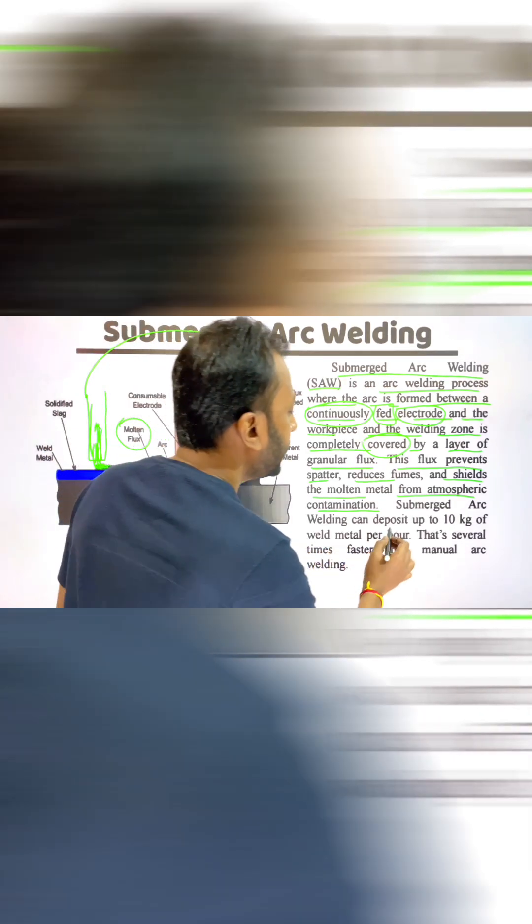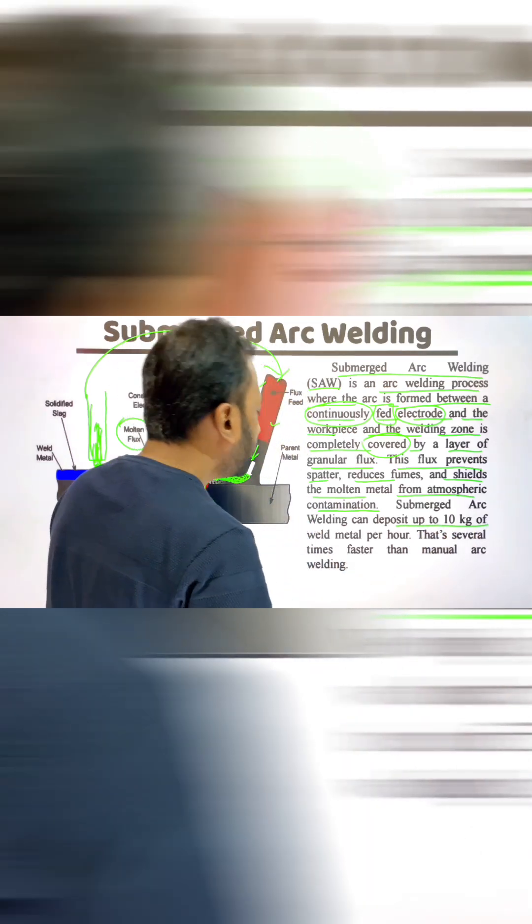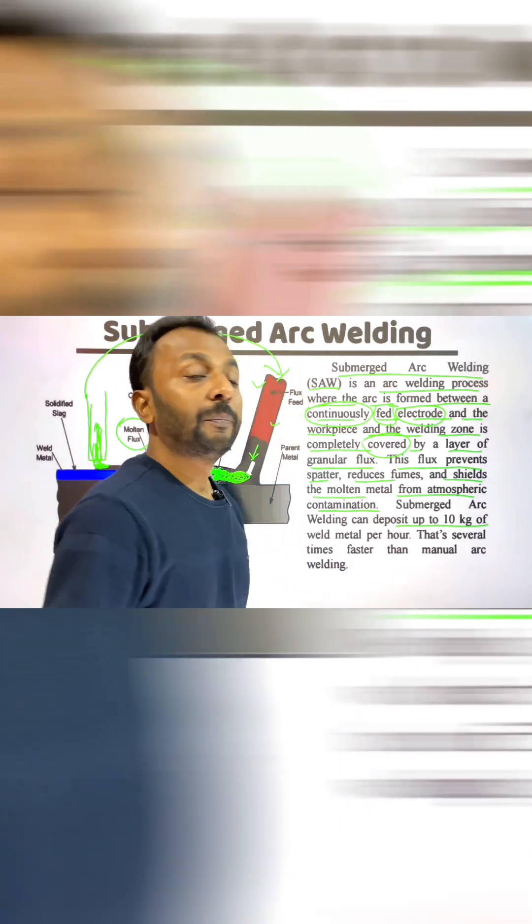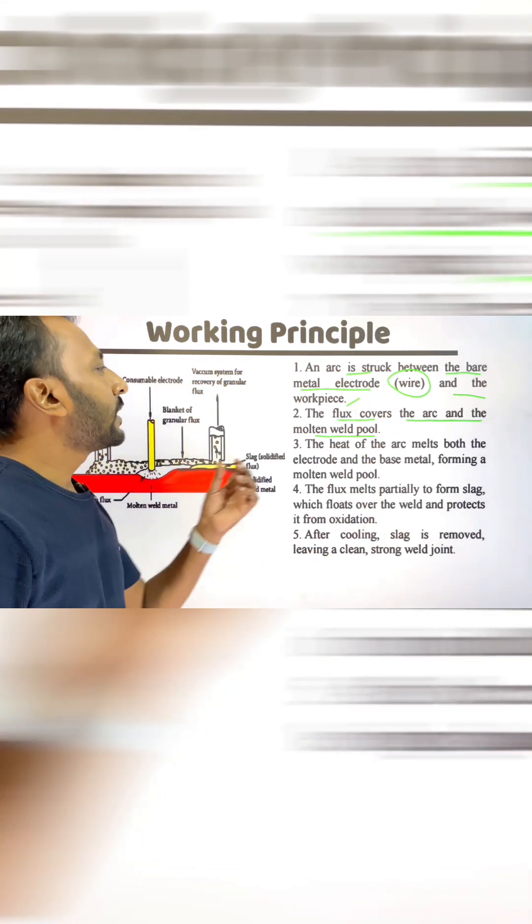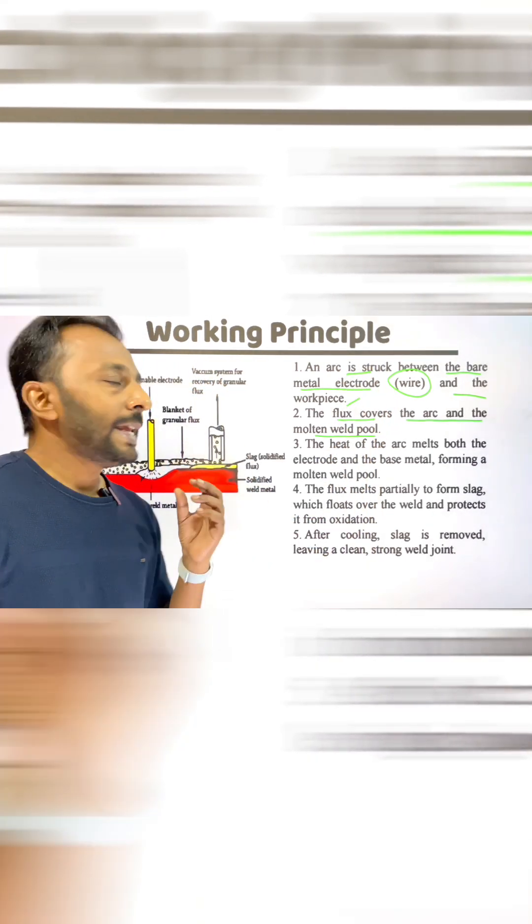In submerged arc welding, the deposition is up to 10 kg of weld metal per hour. The arc is struck between the bare metal electrode, which is the wire, and the workpiece.